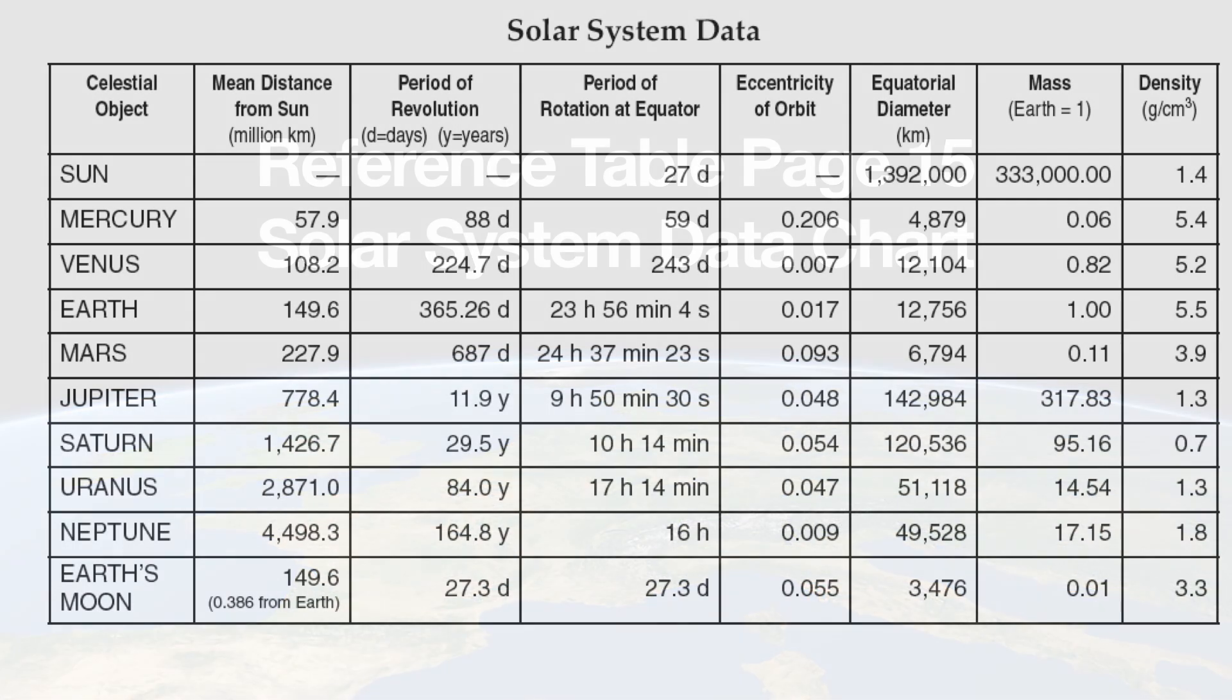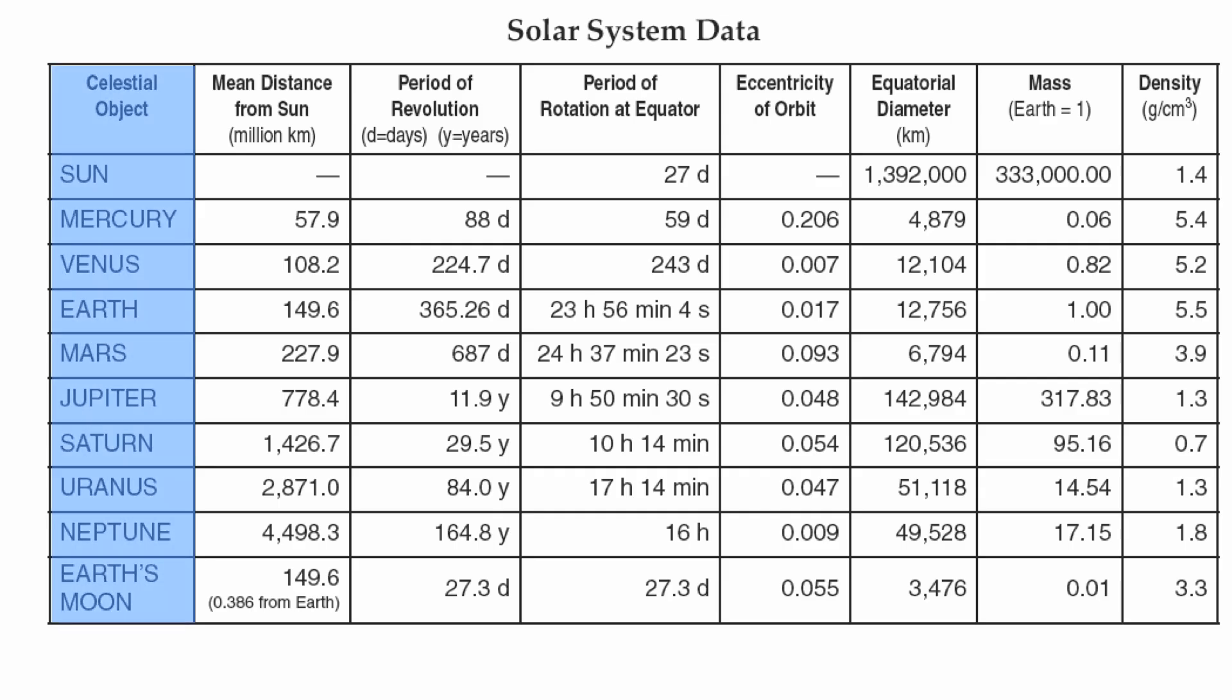Now this chart is relatively easy to read because everything's in nice neat columns and rows. So let's start all the way to the left hand side. These are the objects that are up in space. This is basically our solar system: our eight planets, our sun, and including our moon.